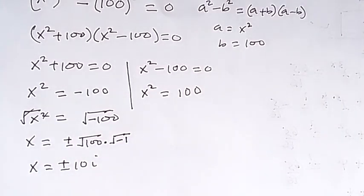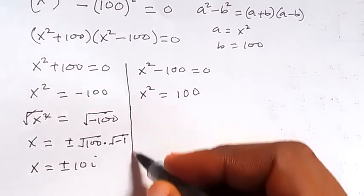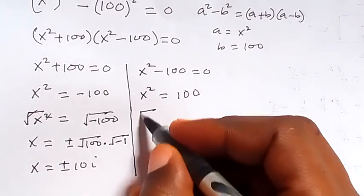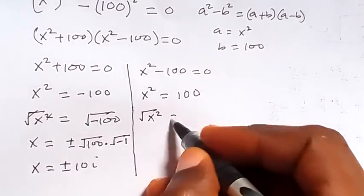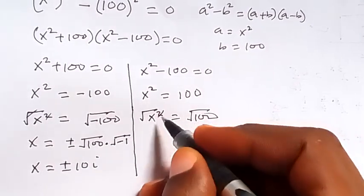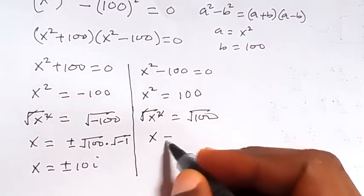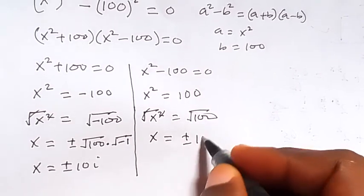And also from here we can square both sides: square root of x squared equals square root of 100. Square cancels square root, we have x equals plus or minus 10.